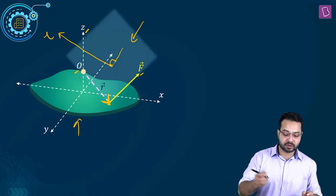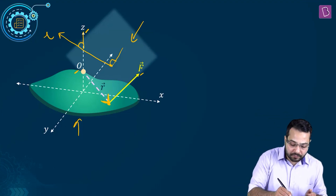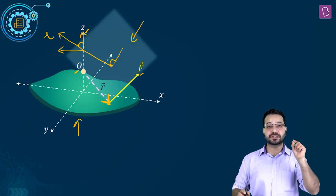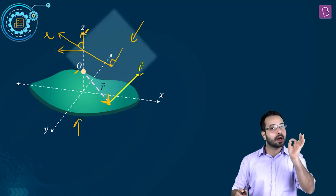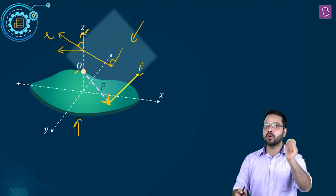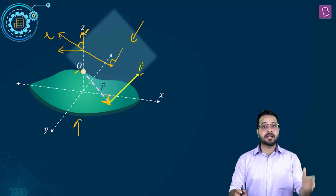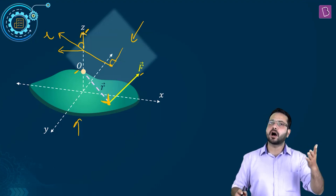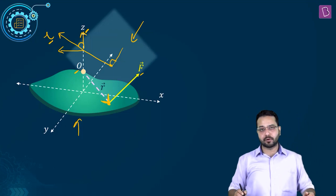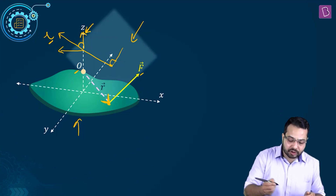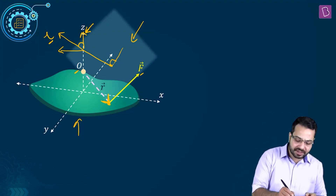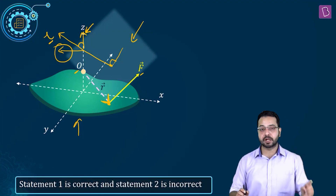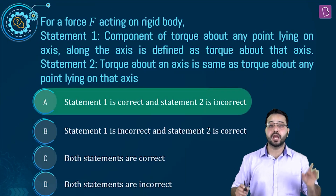Taking the component of torque parallel to the Z axis defines the torque about the Z axis — so statement one is certainly true. Statement two claims torque about any point on the axis equals torque about the axis — but the torque vector about point O has a component perpendicular to the axis as well, so they are not the same. Statement two is wrong. The correct answer is that statement one is correct and statement two is incorrect, making option A the correct choice.